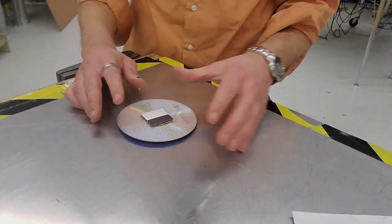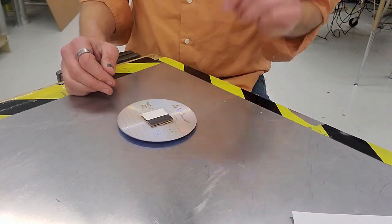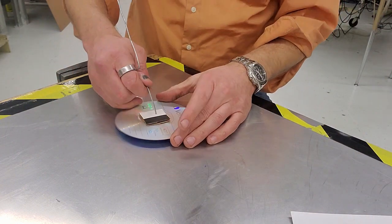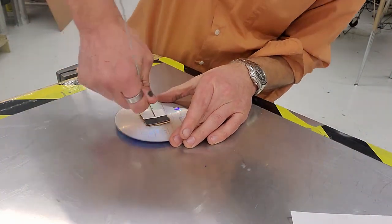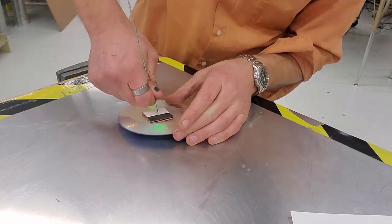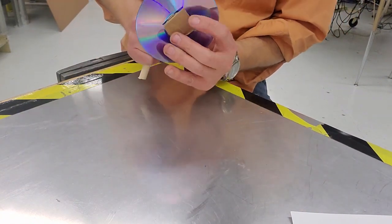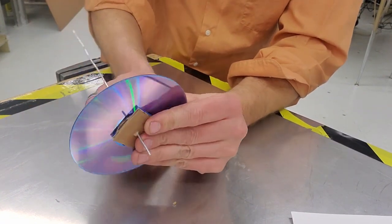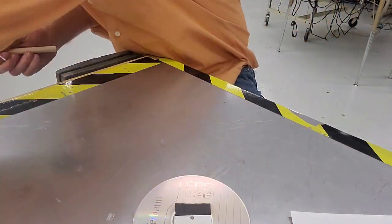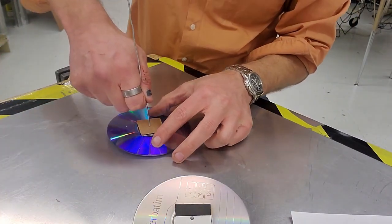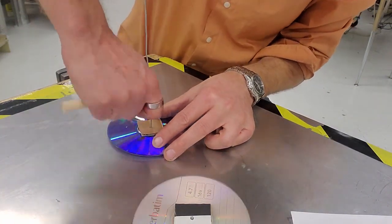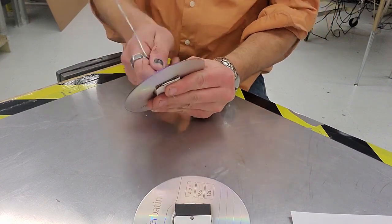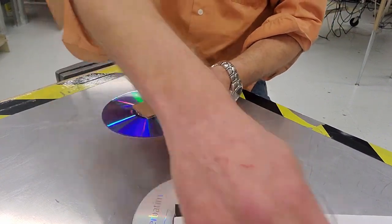Before we attach the flywheels, we need to poke the hole in them. You can use a pencil or your crankshaft wire, roughly in the center. The same way we poked the holes in the crankcase, being careful we don't poke our finger, we're going to poke a hole in each flywheel as close to the center as you can get it. It doesn't have to be perfect, but the closer you get it, the smoother your engine's going to run.